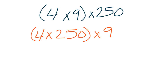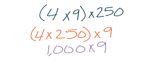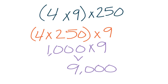Since 4 times 25 was easy like dealing with quarters, for 4 times 250 we're just adding an extra zero. So if 4 times 25 is 100, then 4 times 250 is 1,000. Now we multiply that times 9, which is a really easy problem at the end. 1,000 times 9 gives us 9,000 as our product. By moving some numbers around and changing where our parentheses were, this problem became a lot easier to solve.